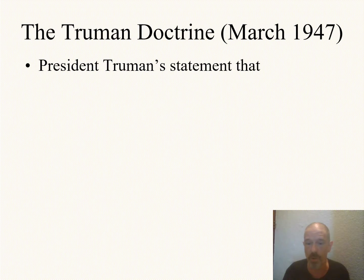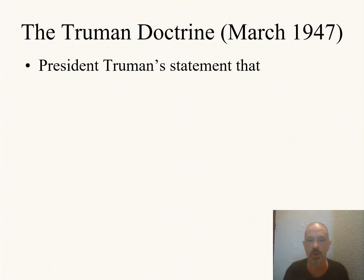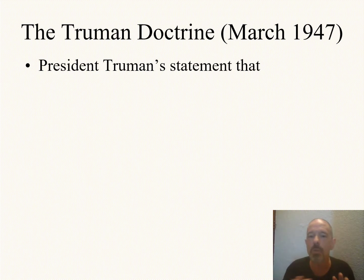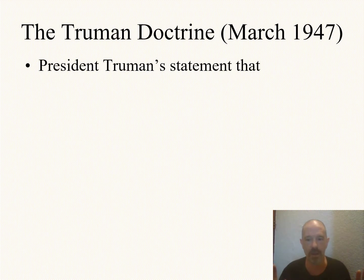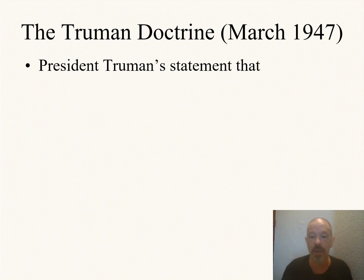The most the United States was willing to do was say, we're not going to get involved, but perhaps we could find ways to loan you some weapons. Now that's 1940. Look at what has changed only seven years later. The United States was traditionally isolationist — did not get involved in European affairs militarily. Here's what President Truman says in March of 1947.